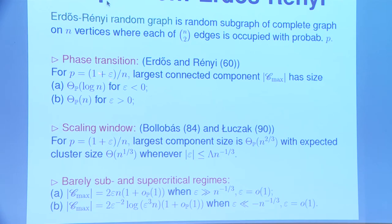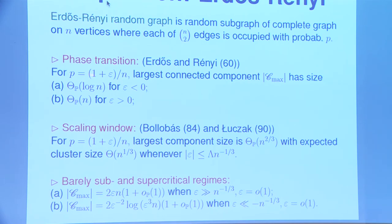The double jump: take p of the form (1 + ε)/n. If ε is negative and fixed, the largest connected component is basically logarithmic in size. If ε is positive, it contains a positive proportion of the vertices — a giant component, just like on infinite graphs. This says the critical value should be around 1/n. At exactly 1/n, cluster sizes are of order n^{2/3}, giving anomalous critical exponents.